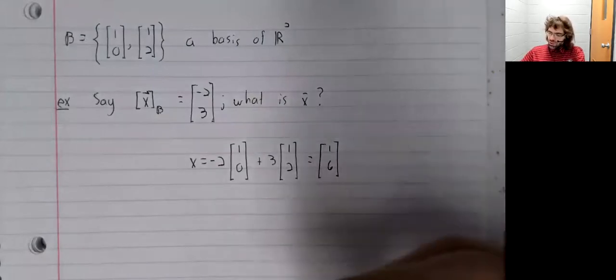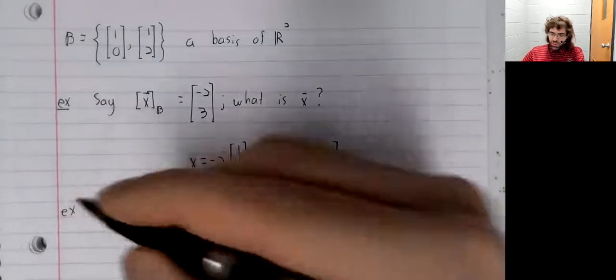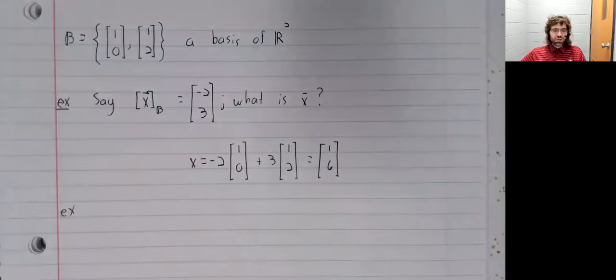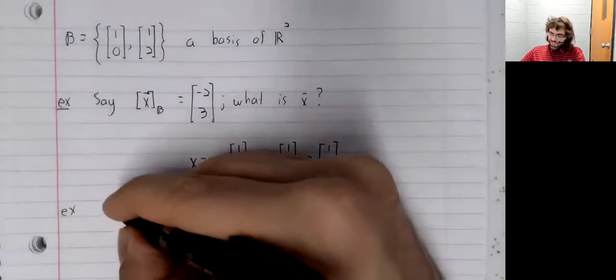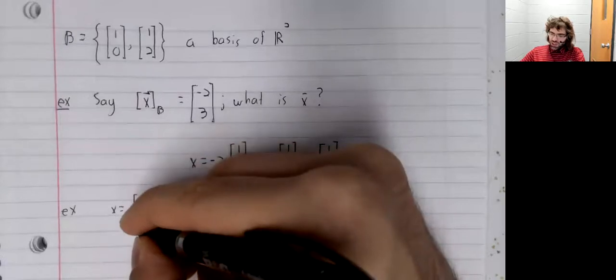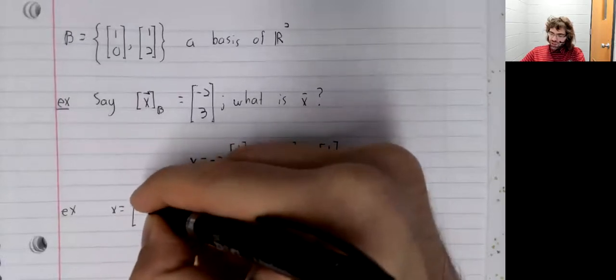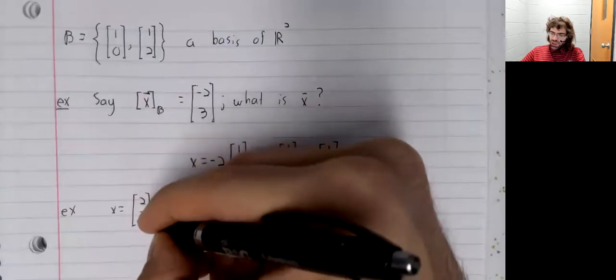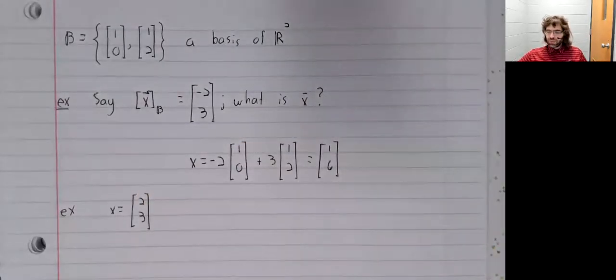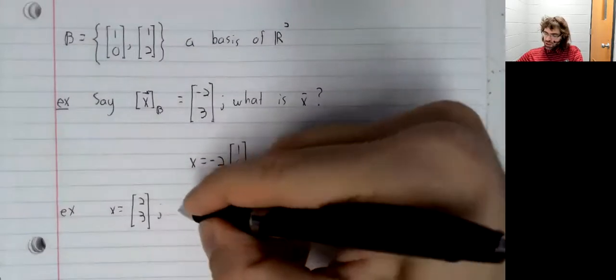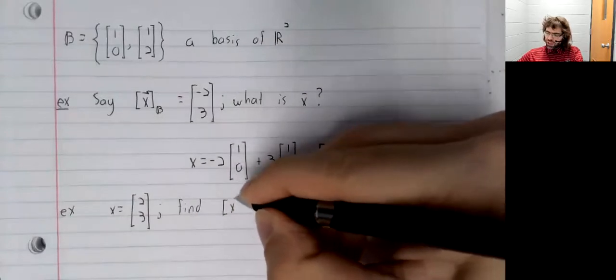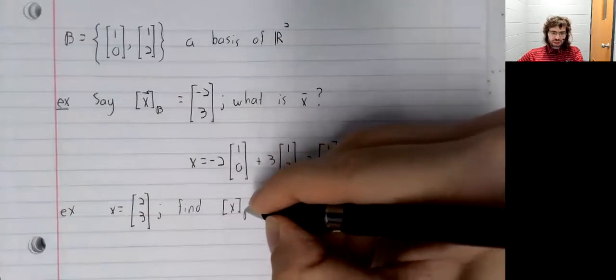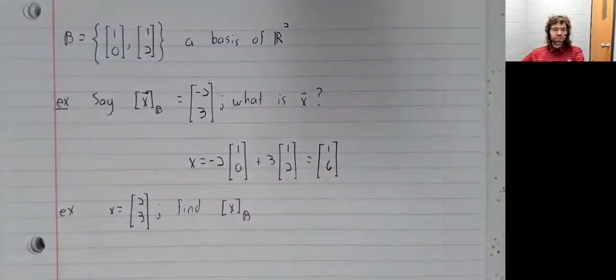Let's do a second example that maybe requires a little more work. We'll keep this basis. And this time we'll say what x is. x will be 2, 3. And we'll ask what is the coordinate vector of x with respect to b?